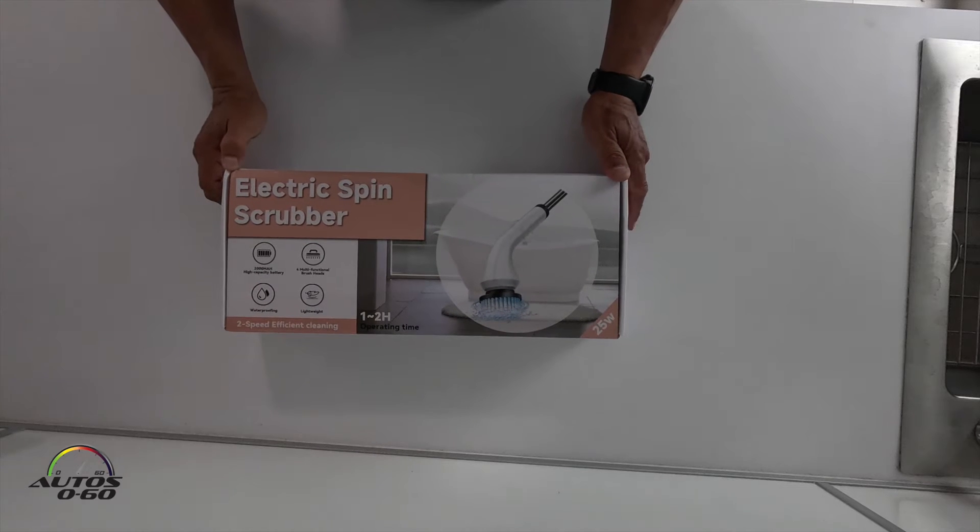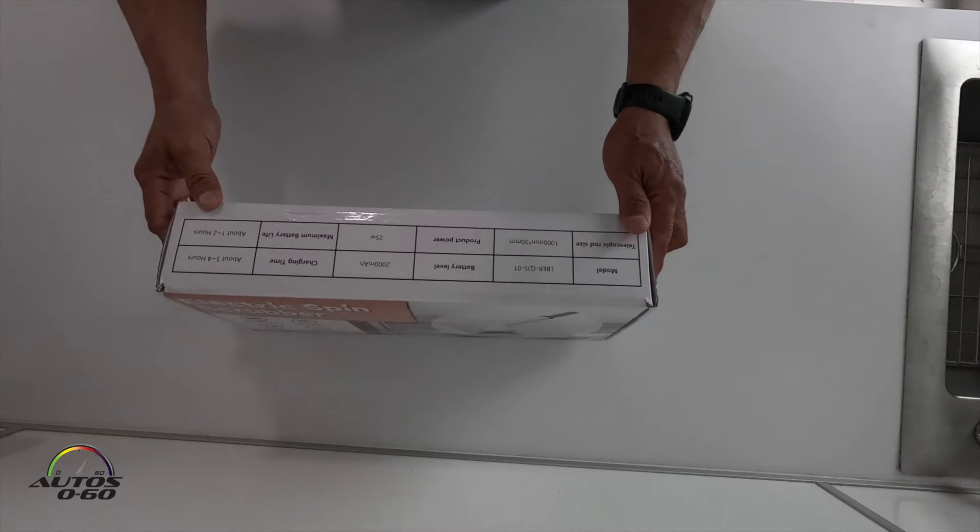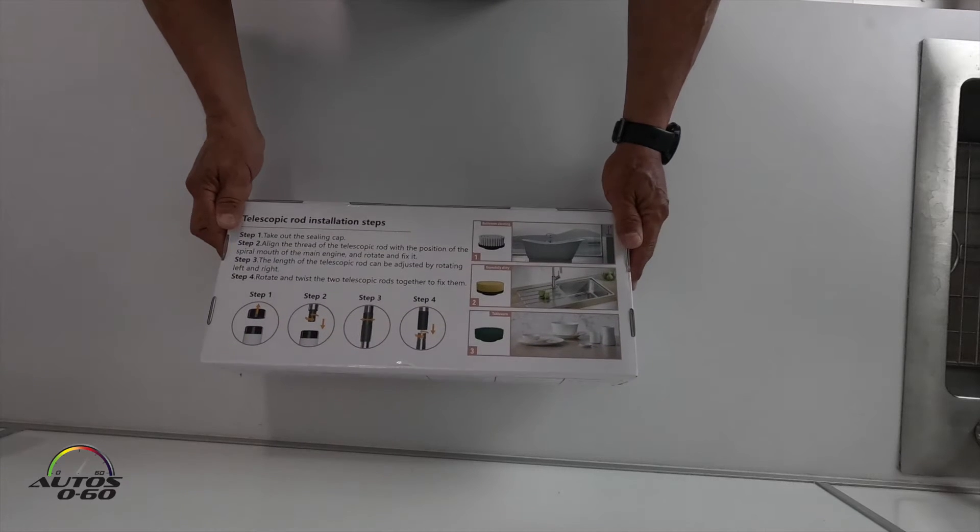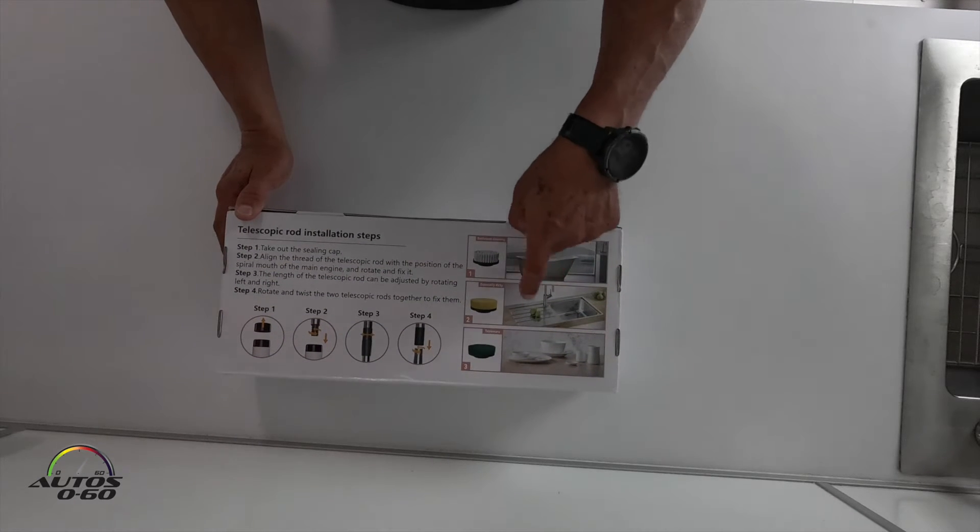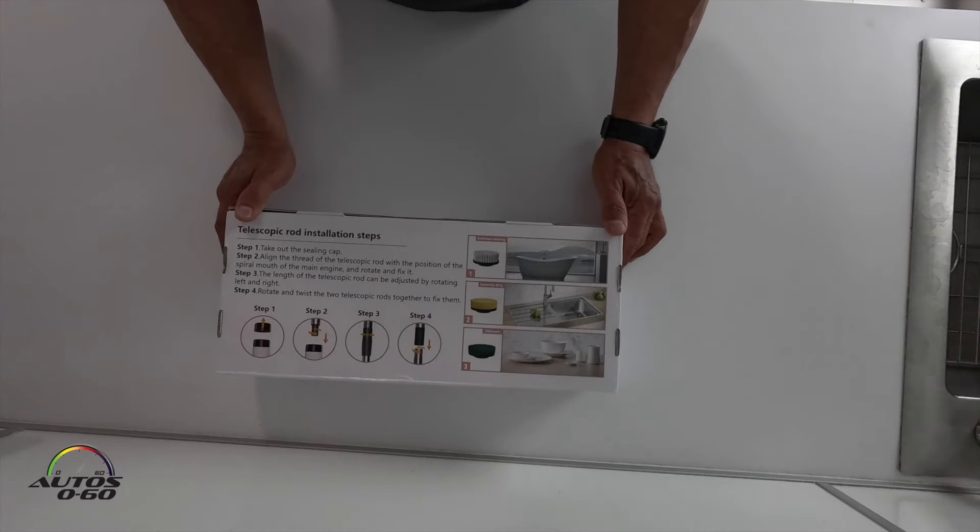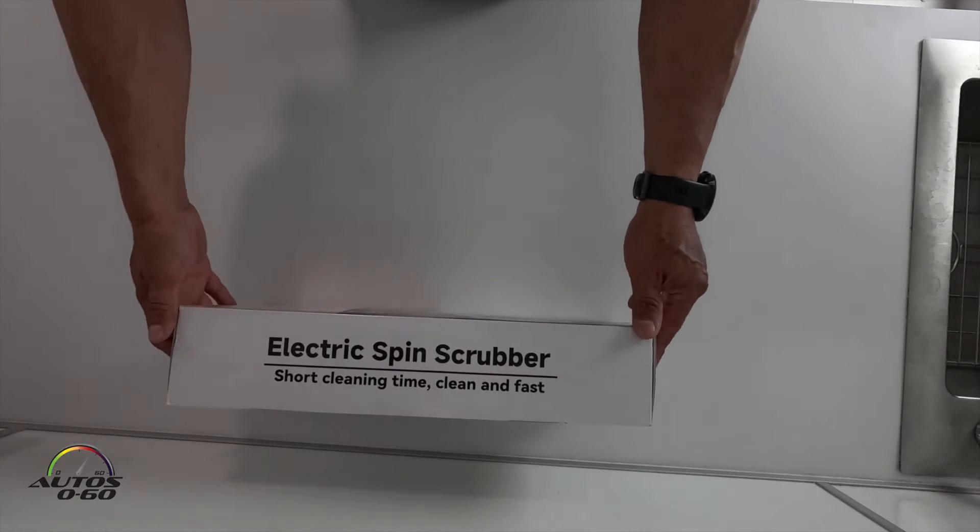So this is an electric spin scrubber, which I'm going to use not for this intent, like bathroom, kitchen, or tableware, but for the cars.